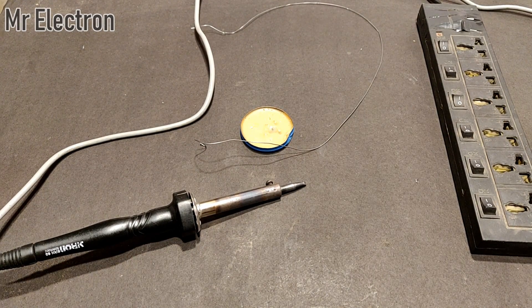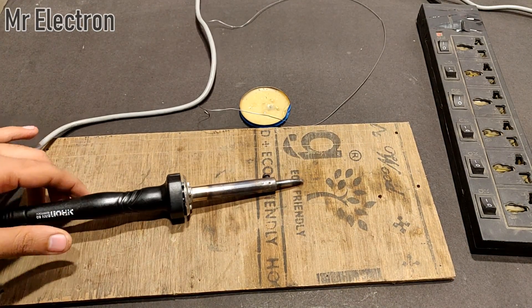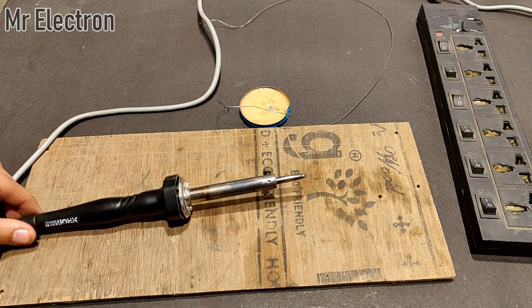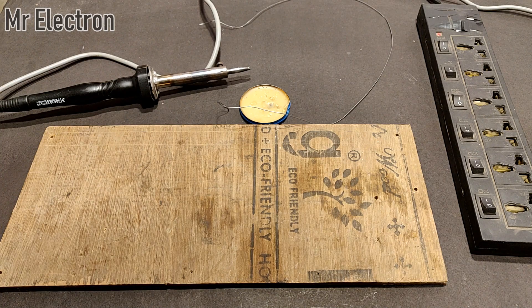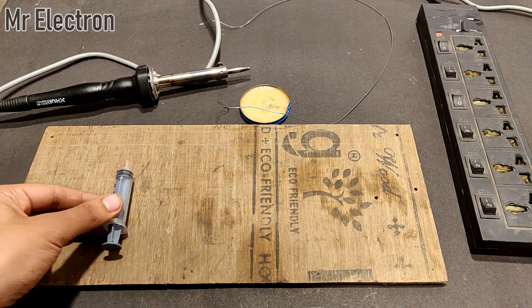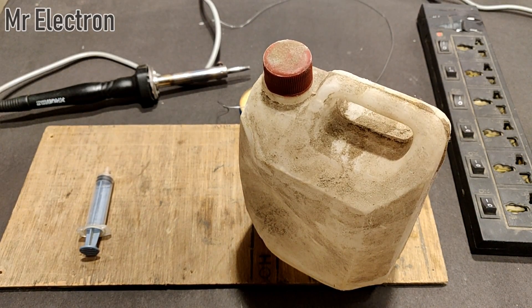Okay, now take a wooden base, keep your soldering iron on it. Now what you are going to need are two things: one is this syringe and the other is some amount of sulfuric acid.